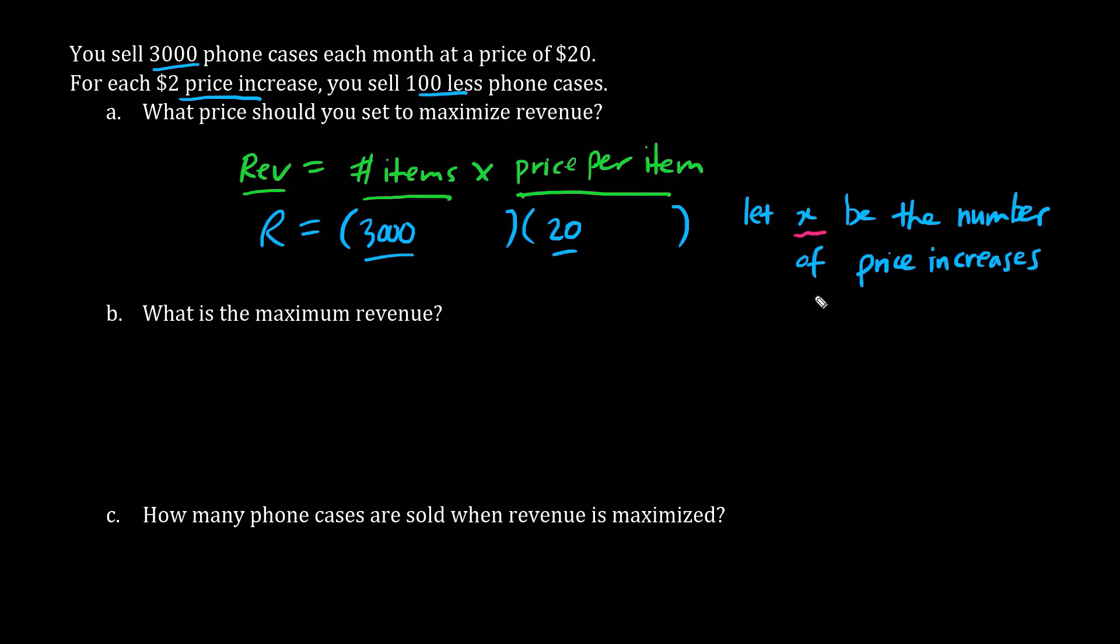Let x be the number of price increases. So if the original cost is $20, when we have a price increase, we add 2x. Because when x is 0, there is no effect on the price. But when x is 1, we add $2. So each $2 price increase is represented by plus 2x.